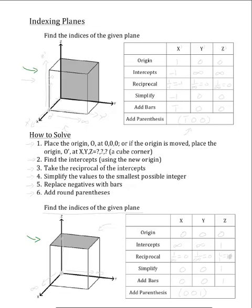In solving for the indices of this top plane, the first step will be to choose the origin. The origin can be at any point within the cubic unit cell, but it is usually at zero, zero, zero. Unfortunately, the origin is not allowed to lie at any point on the plane, so for this problem we will have to move it.